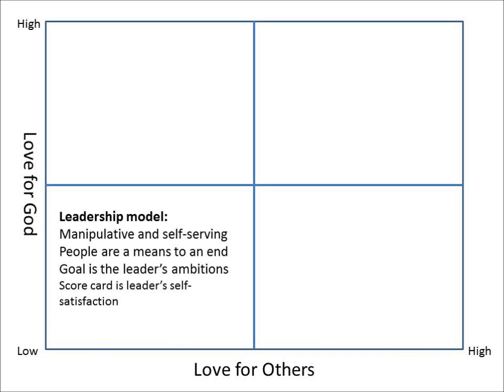The first leadership model is in the lower left-hand corner — low love of God and low love for others. This is a self-centered position. The leadership model portrayed here is manipulative and self-serving. It puts people as the means to an end — they are not valuable in themselves but simply help the leader reach his ambitions. The scorecard for this leader is self-satisfaction and his ability to move up the ladder of success.